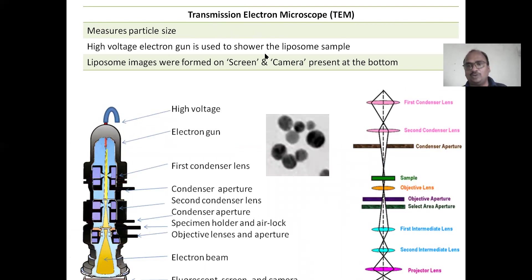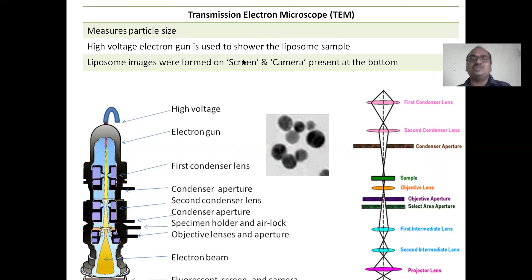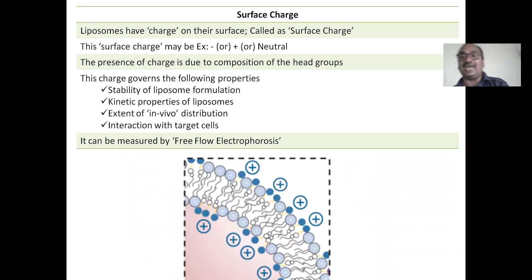Transmission electron microscopy (TEM) measures particle size using high-voltage electrons — do not write 'compound microscopy' in the examination. An electron gun forces electrons toward the sample. The electrons pass through a primary lens and a secondary lens and fall on a screen, where you get a direct image of the liposomes. A camera at the bottom captures the image.